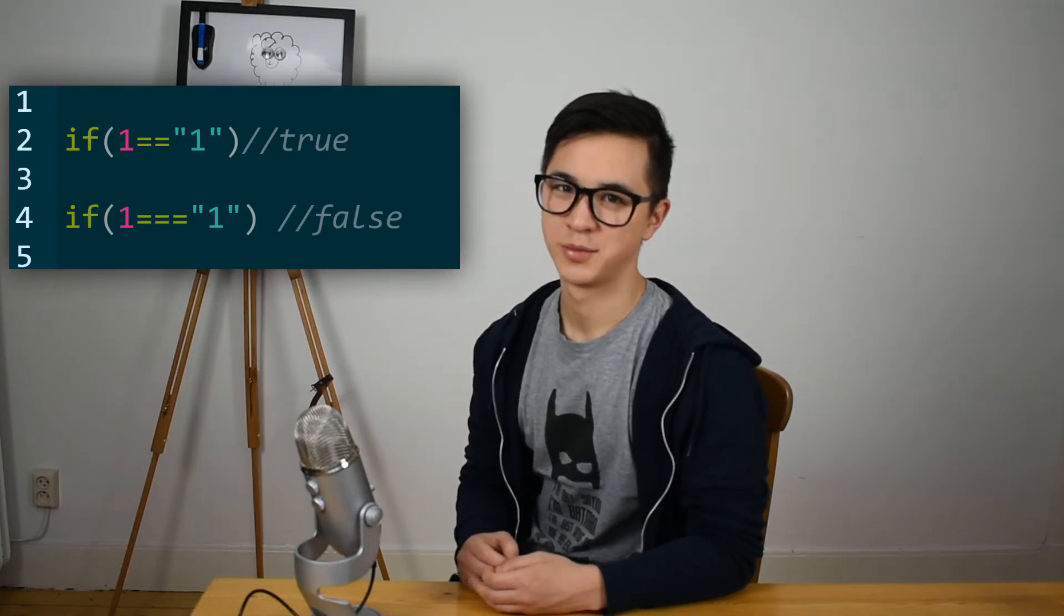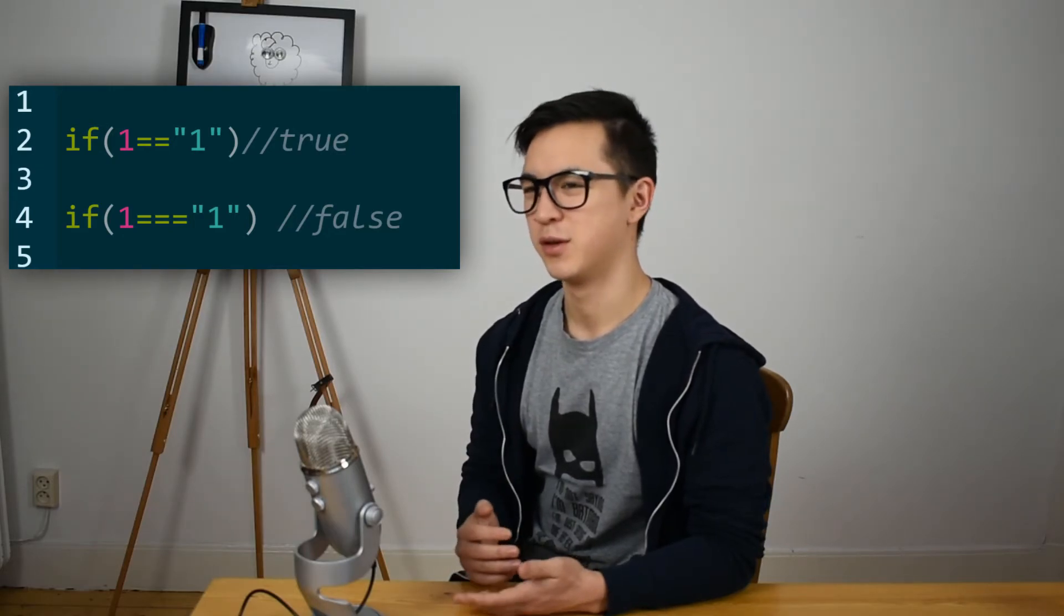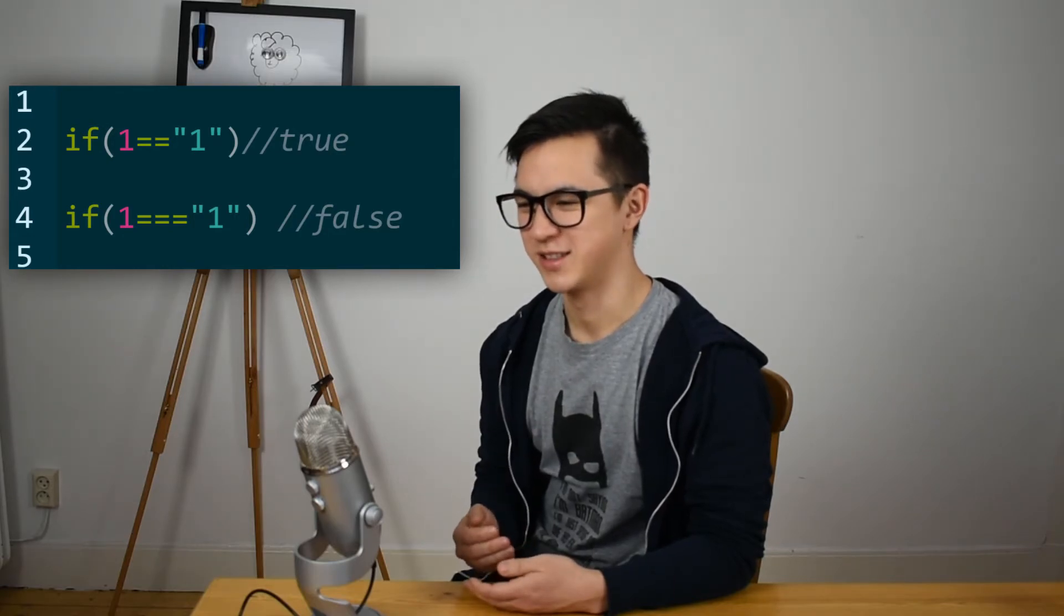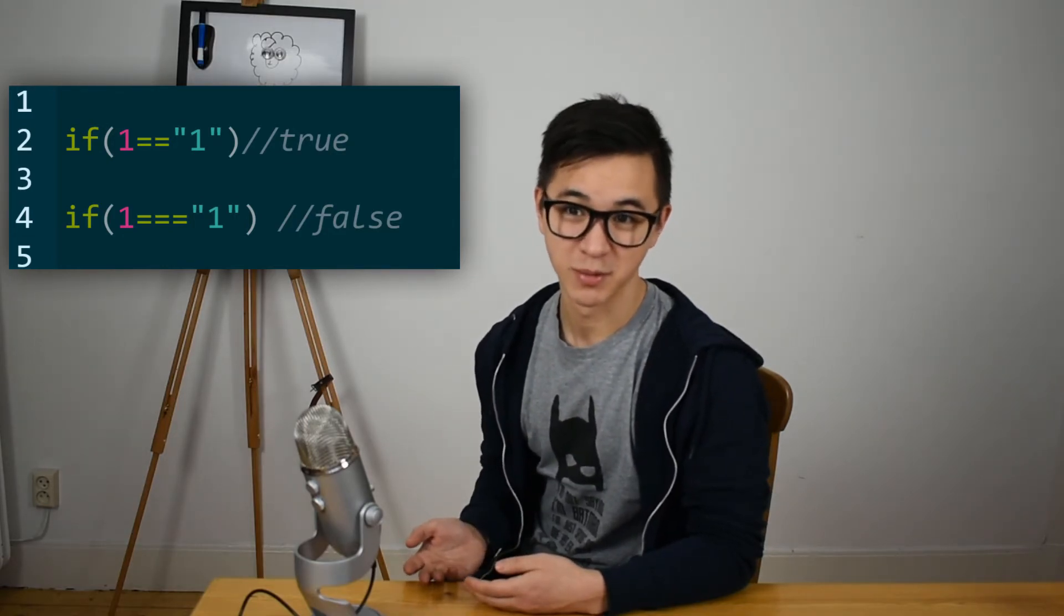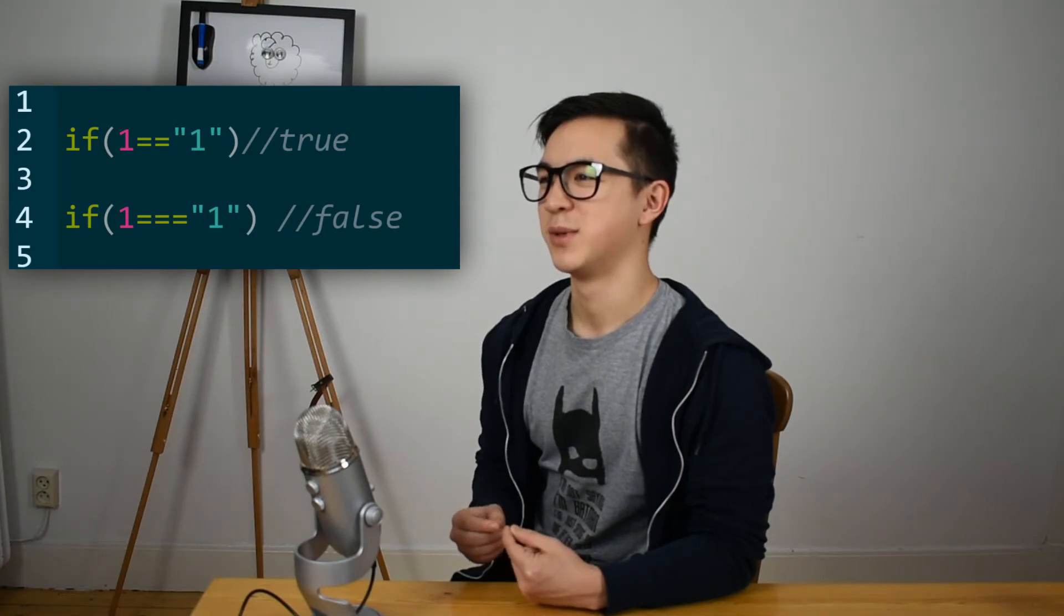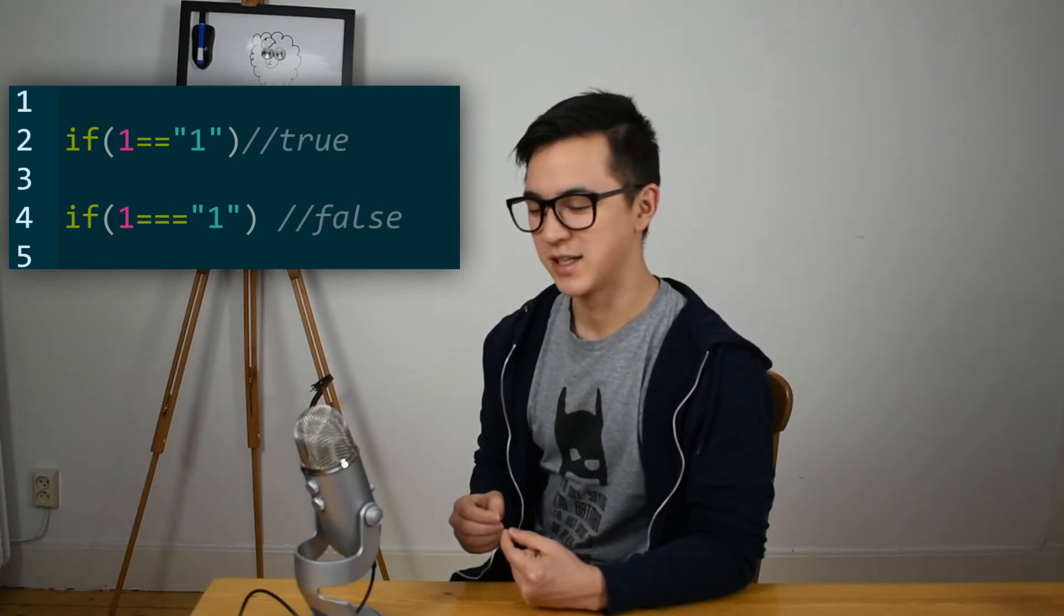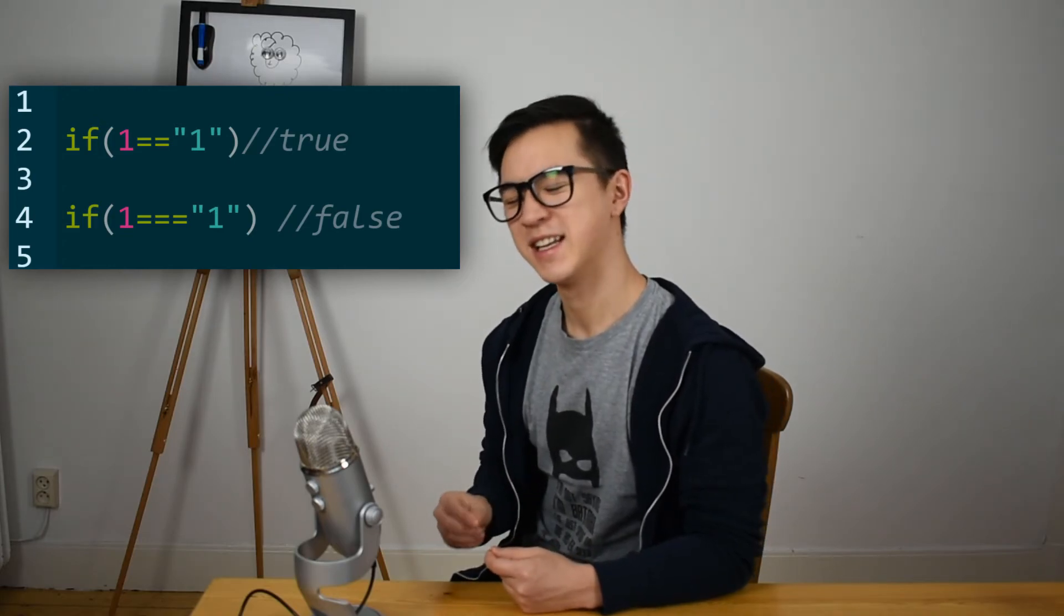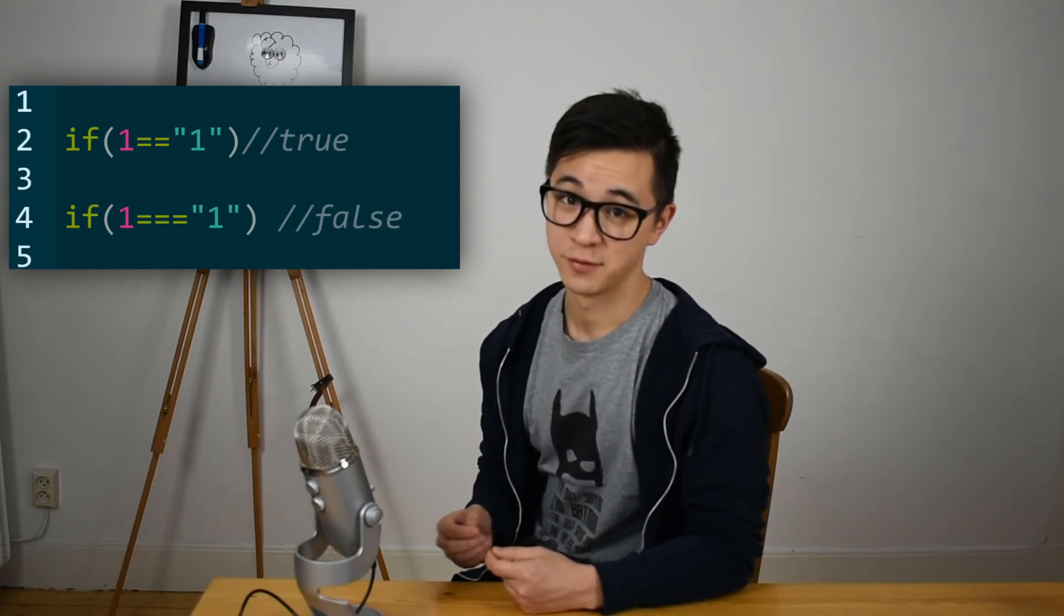Also, two equal operators kind of invite those really tricky bugs where you won't get an error message telling you exactly where to go and fix the problem. They're the kind of bugs where under certain circumstances, your code won't work as intended, and those can be really tricky to find and solve.